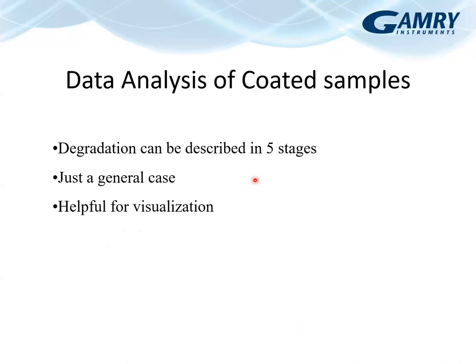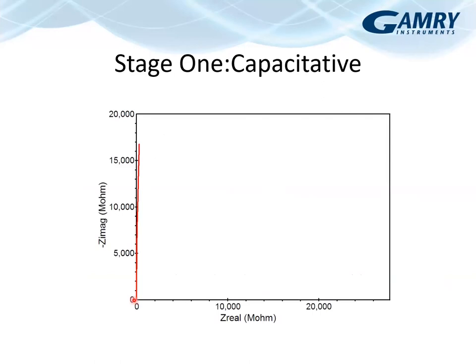Let's look at how a coating degrades theoretically, across five stages. Stage one: brand new intact coating, freshly painted and cured. Measured immediately in the cell, you see a pure capacitor — the phase is locked at minus 90 degrees, impedance magnitude increases in a straight line on the Bode plot. On the Nyquist plot, it starts near zero and goes straight up. That's stage one.